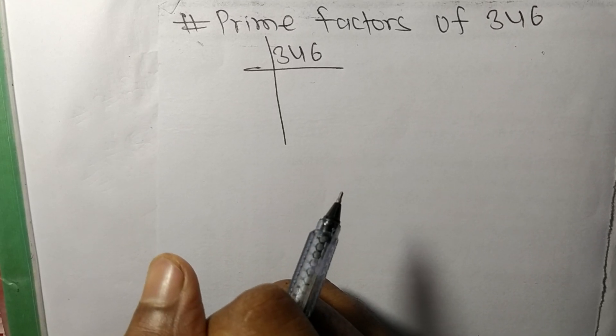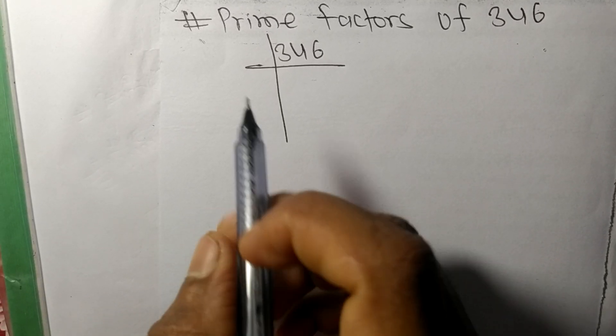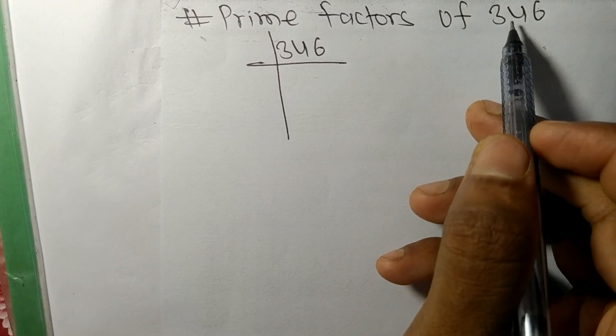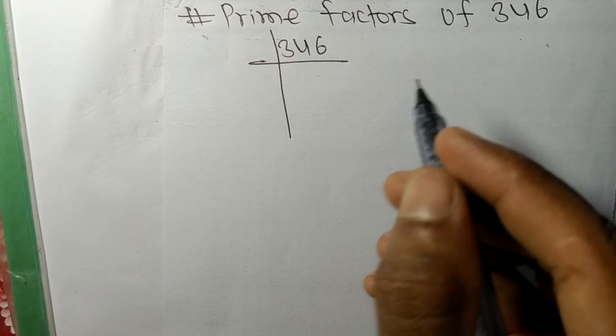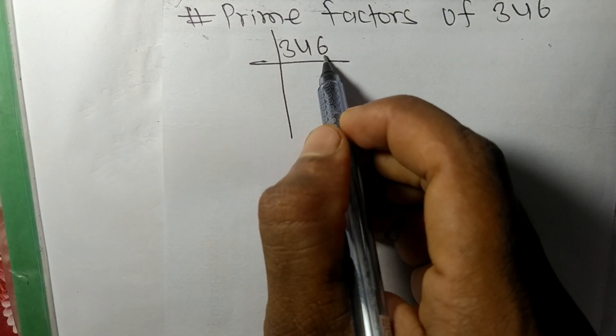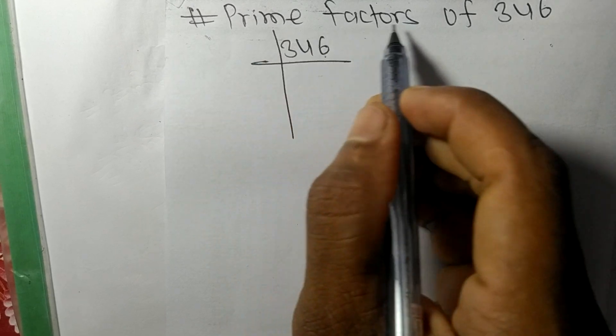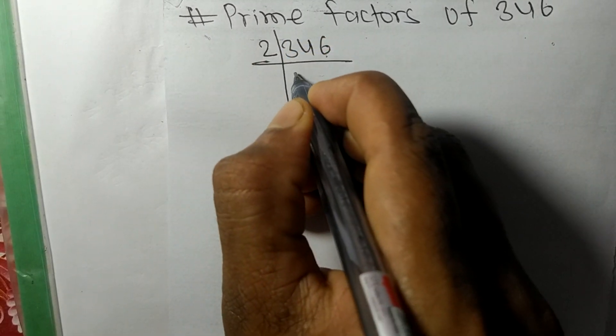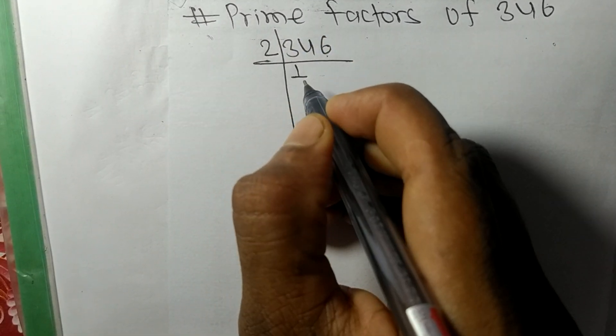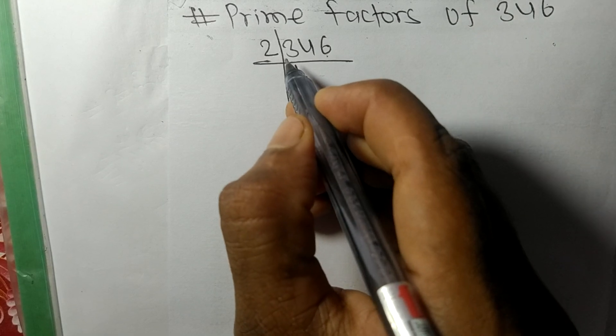So today in this video we shall learn to find the prime factors of 346. It contains an even number 6, so this whole number is divisible by 2. 2 times 1 is 2 remainder 1.